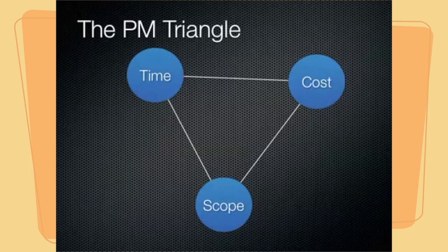When we are considering these aspects of our project, especially in planning, it is important to consider what trade-offs we are willing to make as the project proceeds. This way, the project manager and the project stakeholders have a clear understanding of project priorities. We can make this understanding very clear using a tool called a project priority matrix.